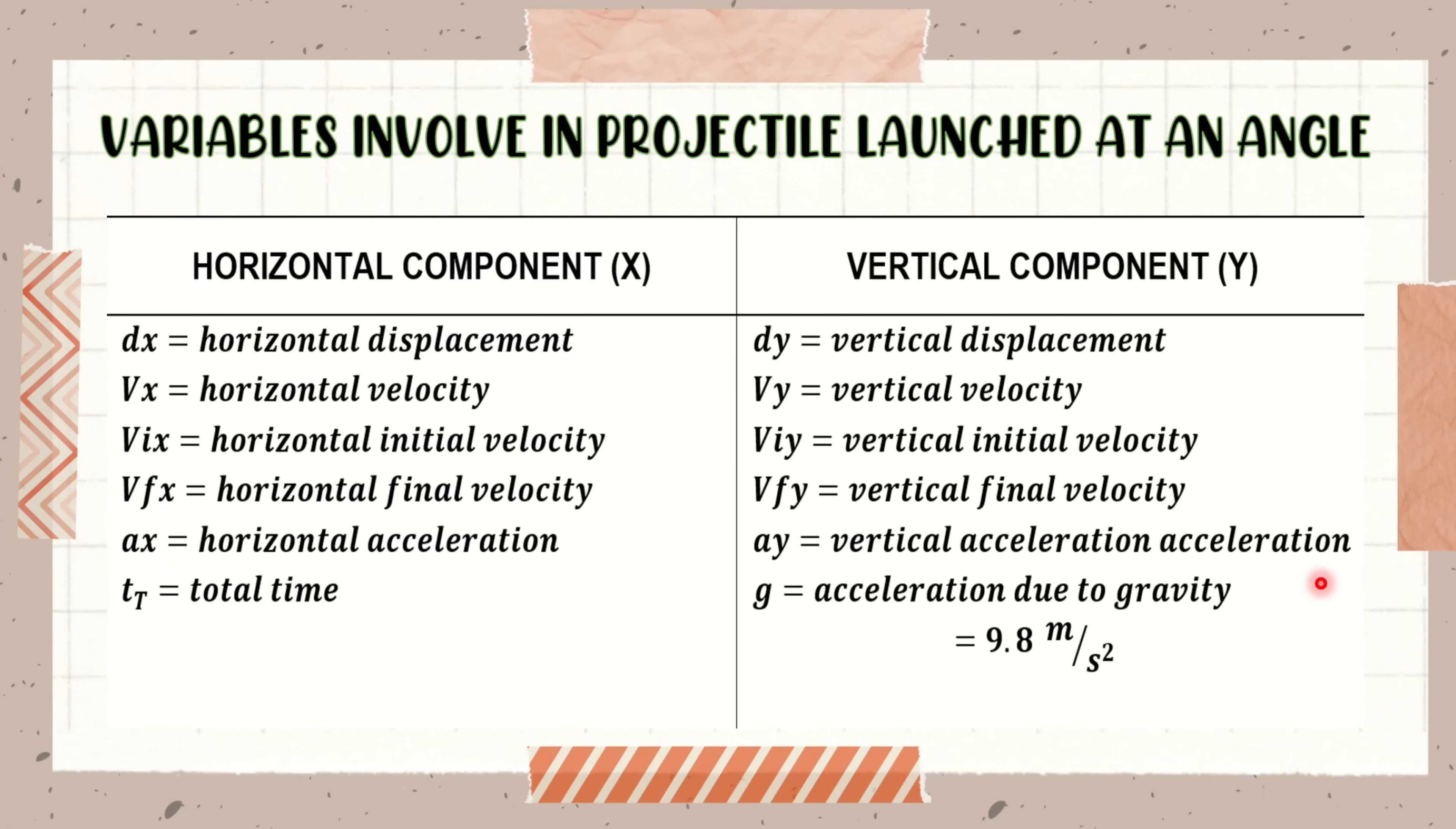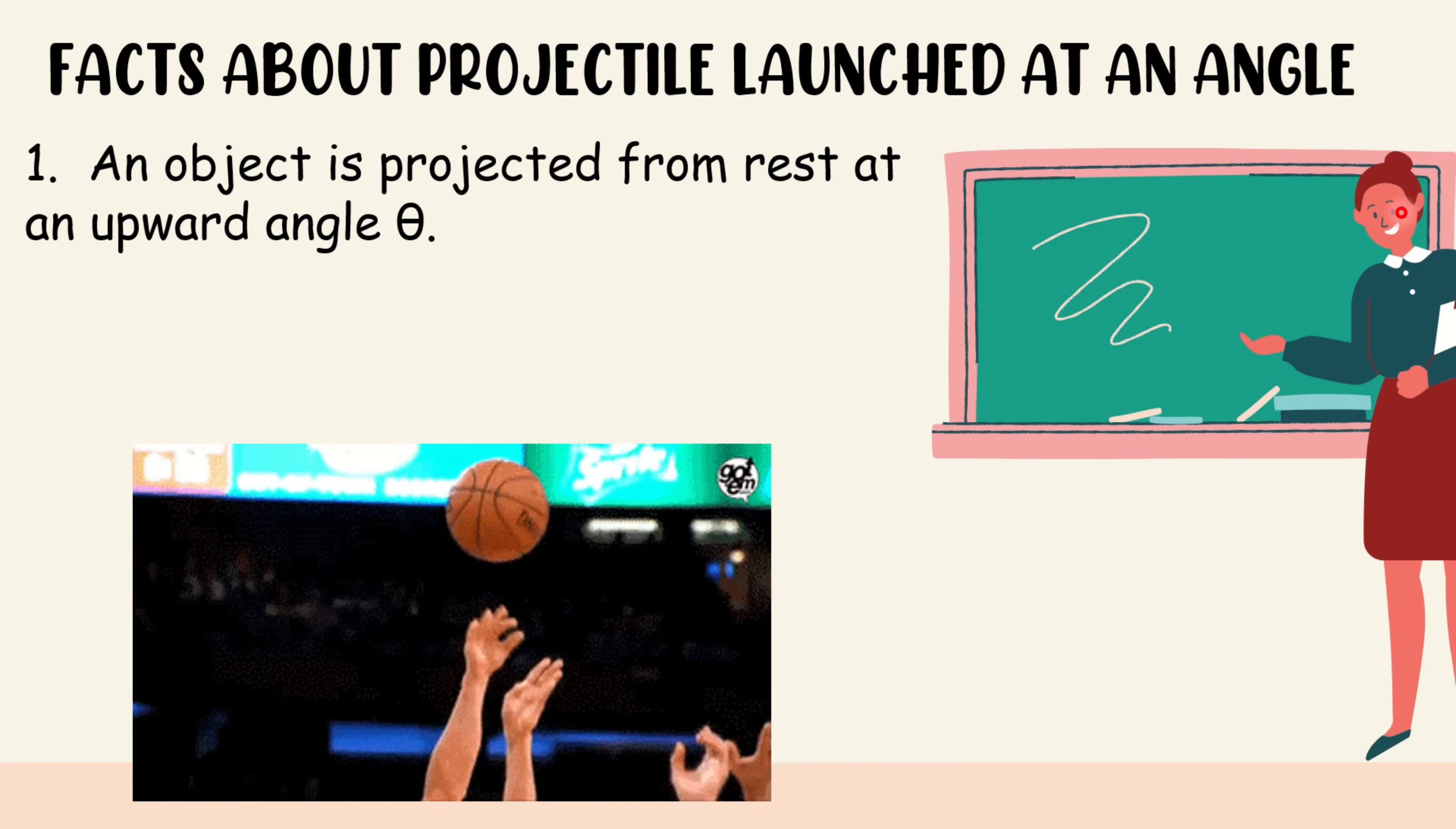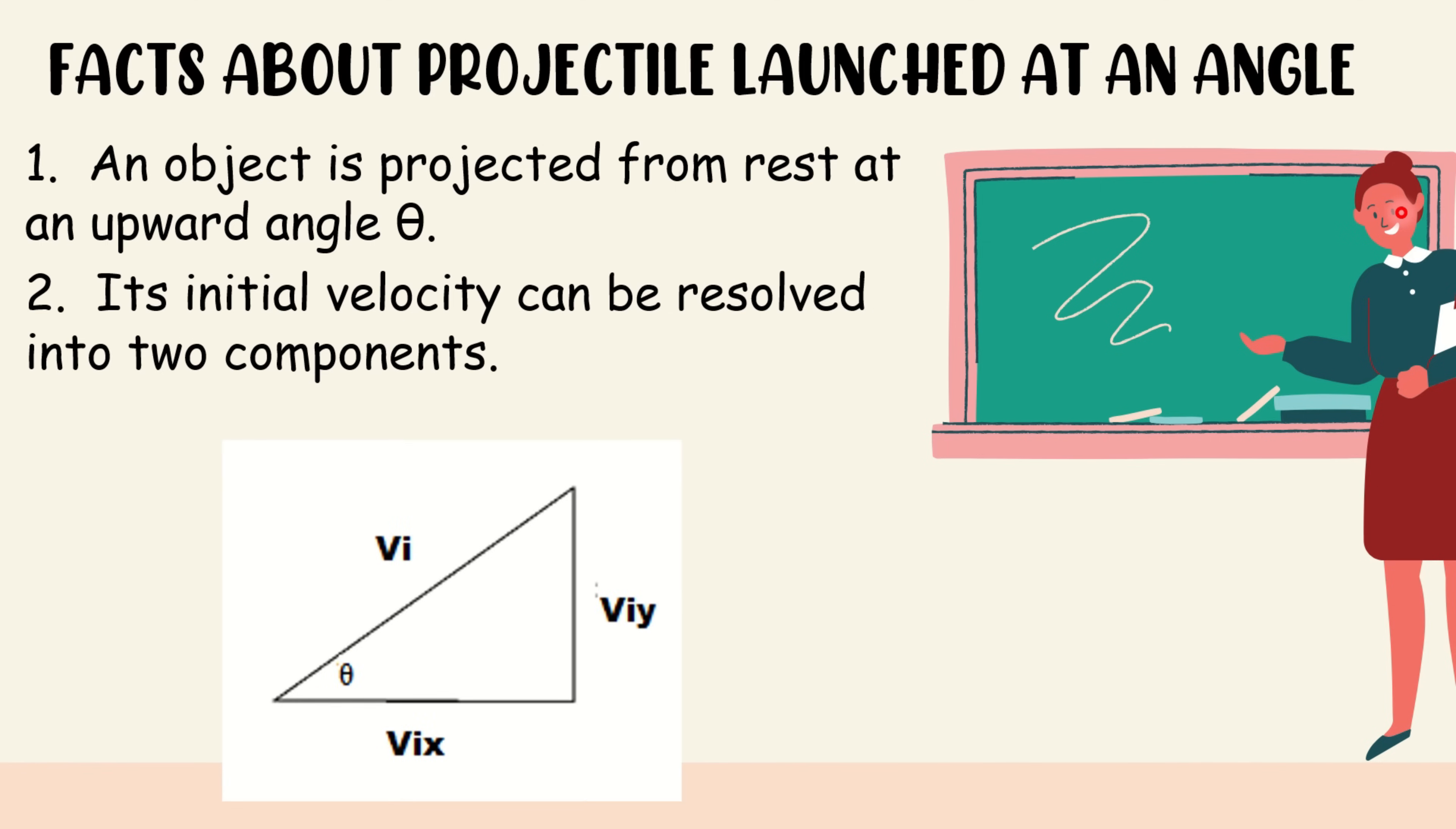Now, take a look at the variables involved in projectile launch at an angle. Next, we have the facts about projectile launch at an angle. First, an object is projected from rest at an upward angle theta. Just like this scenario, the ball started from rest where Stephen Carey is holding the ball. Second, its initial velocity can be resolved into two components. As you can see, we have the horizontal and the vertical component.